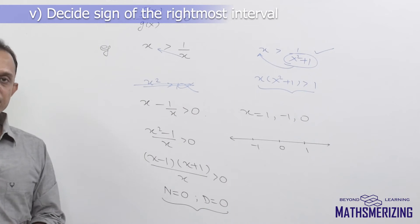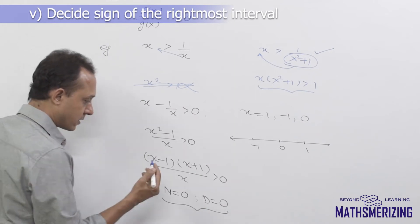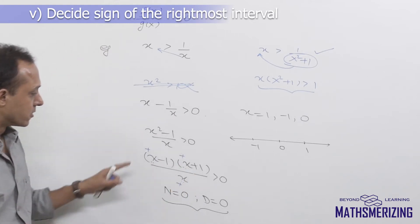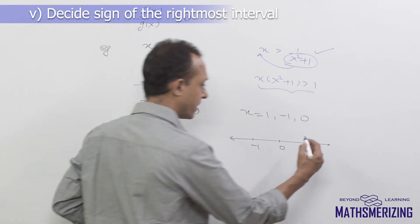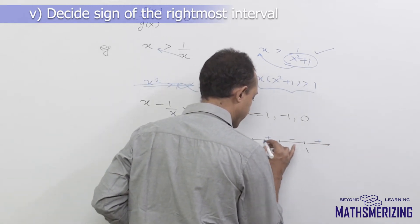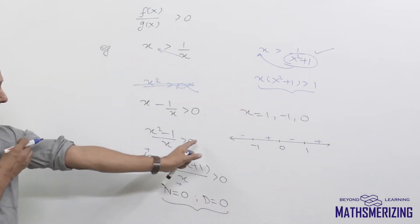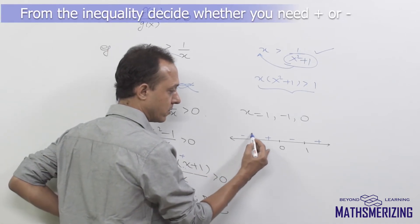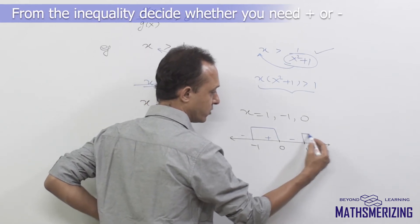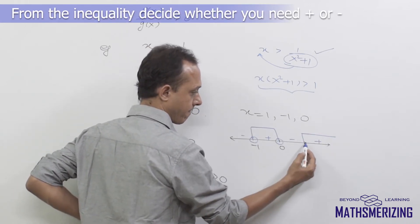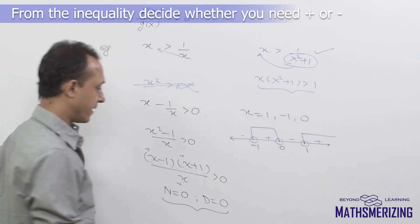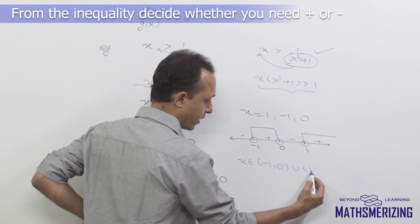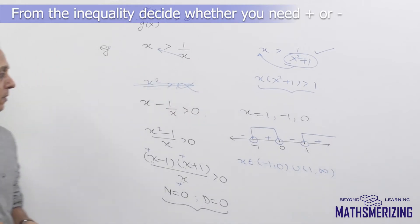Next, find the sign of the rightmost interval. Since the leading coefficient is positive, the rightmost interval is positive. So on the number line we get: plus, minus, plus, minus from right to left. The inequality says greater than 0, so we need the positive intervals: from -1 to 0, and from 1 to infinity. Therefore, x belongs to (-1, 0) union (1, +∞).